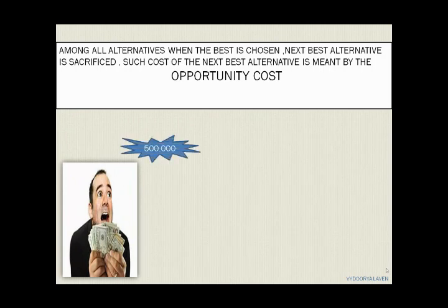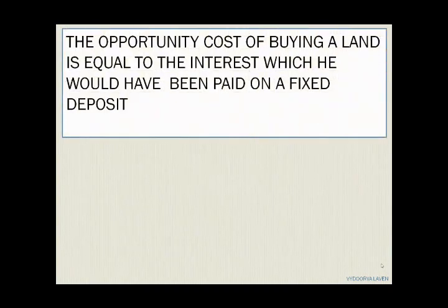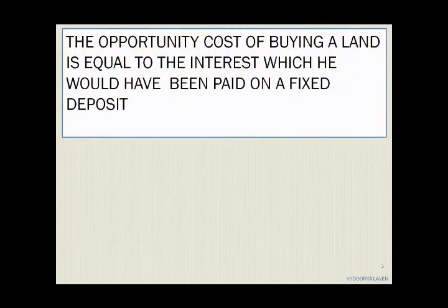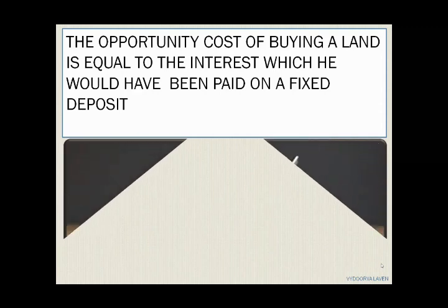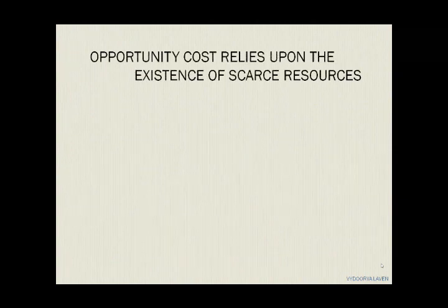Let me explain it with an example. A man has a lump sum amount of 500,000 rupees and has the options of purchasing land or putting that money into a fixed deposit. If purchasing land serves his best interest, he would have to sacrifice the interest to be received from the fixed deposit. So the opportunity cost of buying land equals the interest he would have been paid on the fixed deposit, even at higher interest rates.